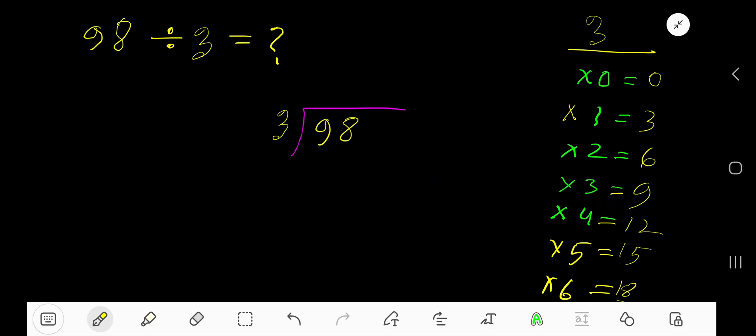3 goes into 9 how many times? 3 times. Write 3. 3 times 3 is 9, subtract to get 0. Bring down this digit, 8. 3 goes into 8 how many times?